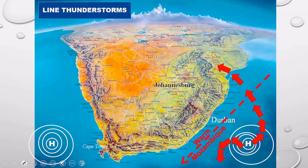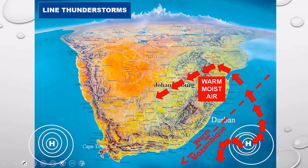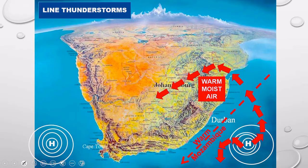As the South Indian high pressure cell blows over this ocean current, it picks up the warm, moist air and blows it inland. The most important thing here is the temperature of the air — it is warm — and also the moisture content of the air. These are two very important factors. Please mention the high pressure by name and explain how it circulates. In this scenario, we end up with the eastern side of South Africa being dominated by warm, moist air.